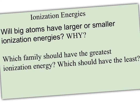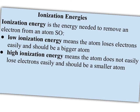As we talk about ionization energy trends, it's important to think about whether big atoms will have large or small ionization energies. Low ionization energy means the atom loses electrons easily and should be a bigger atom. Big atoms lose electrons more easily — the large atoms are to the left, especially the lower left. High ionization energy means the atom doesn't easily lose electrons, so these are going to be the smaller atoms.